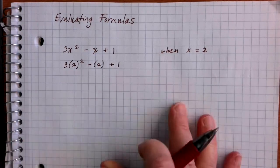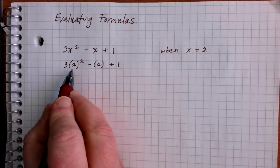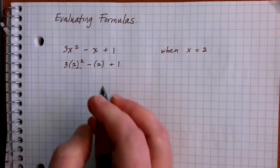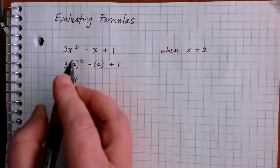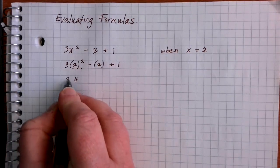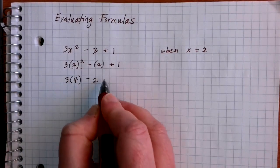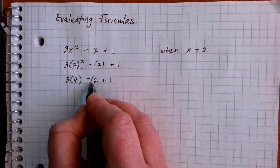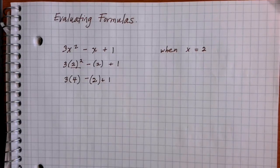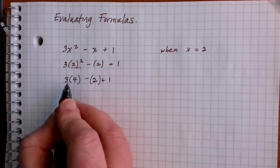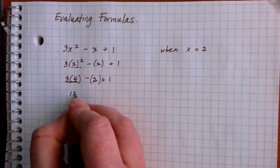Now we can follow the order of operations to evaluate it. 2 squared is equal to 4, and then we copy everything else exactly the way that we see it. So I have 3 times 4 minus 2 plus 1. After we've done that, we move on to multiplication and division. We have one multiplication here: 3 times 4 is 12, everything else stays the same.